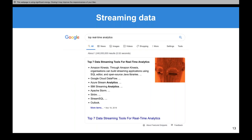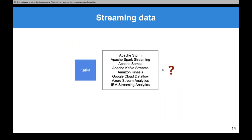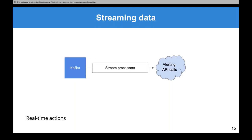We go to Google and type 'real-time analytics' and see tools like Kinesis, Cloud Dataflow, Azure Stream Analytics, Apache Storm, Apache Spark Streaming, Apache Samza, and Kafka Streams. Every public cloud vendor has something like this. What are they? They're stream processors — things that sit on top of Kafka or some other message bus like Google's or Amazon's version, and then do stuff with data coming off of it.